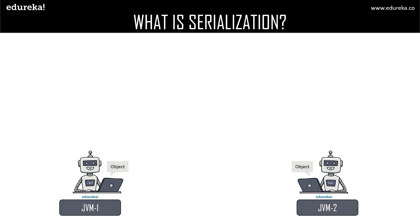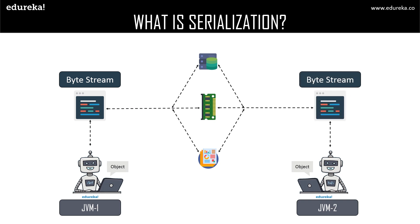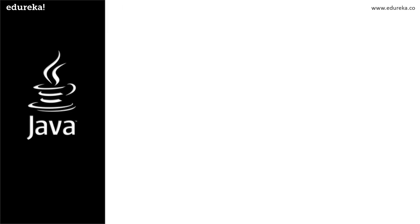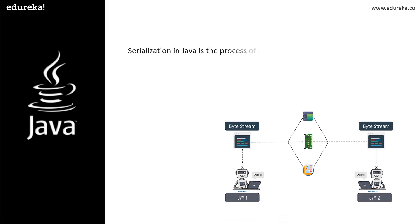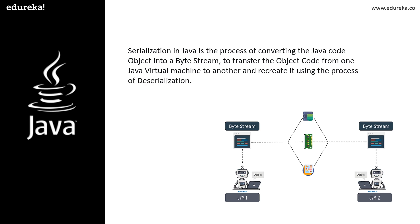To transfer the object from JVM one to JVM two, we must either follow the process of serialization or use an externalizable interface. In the process of serialization, the object is converted into a byte stream and this byte stream is either saved in memory, a database, or in the form of a file. This byte stream is transferred to JVM two where it will be deserialized and the object is retrieved to its original state. Serialization in Java is a process of converting the object code into a byte stream, transferring it from one JVM to another, and recreating it using the process of deserialization.